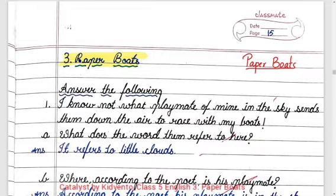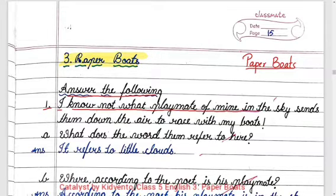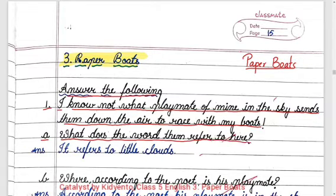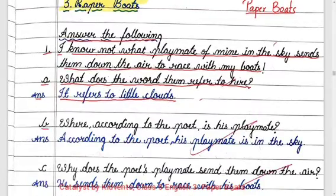Answer the following. First question: 'I know not what playmate of mine in the sky sends them down the air to race with my boats.' Part a: What does the word 'them' refer to here? Answer: It refers to little clouds. So 'them' refers to little clouds.